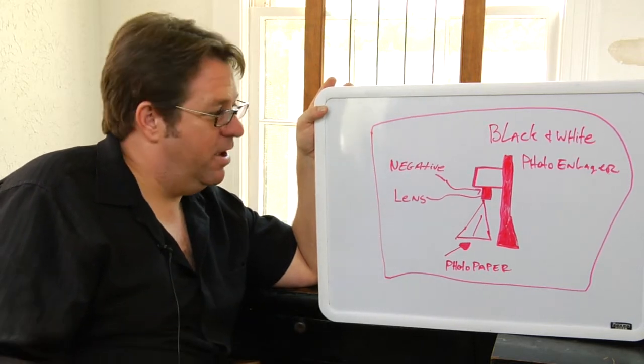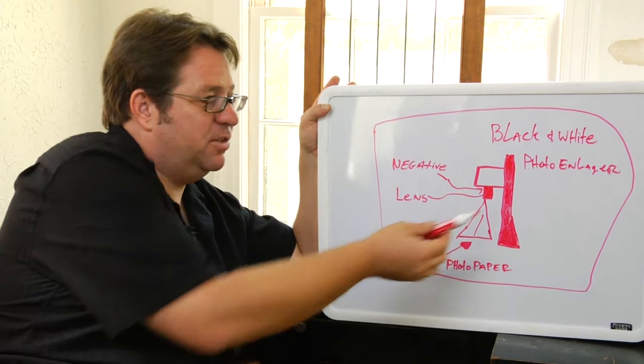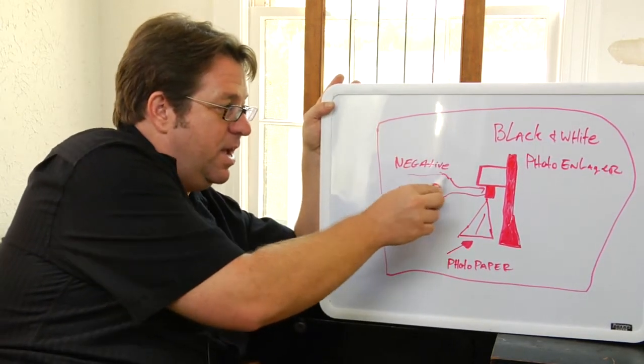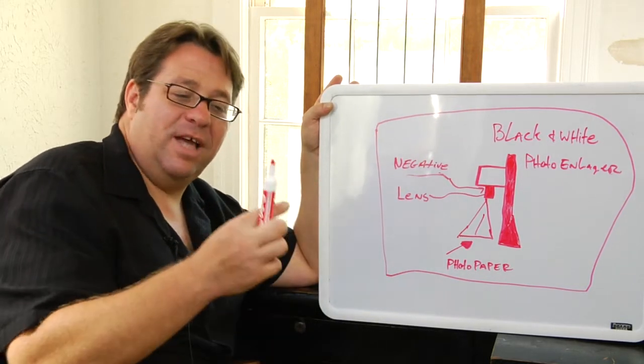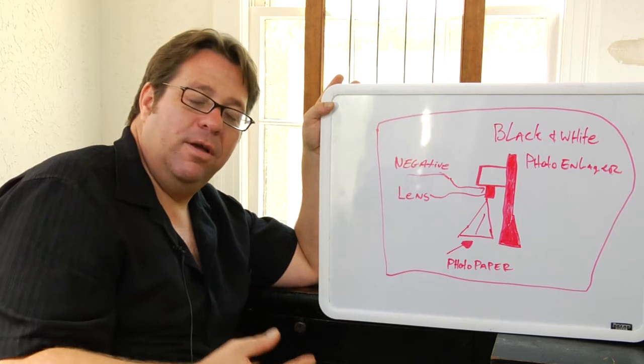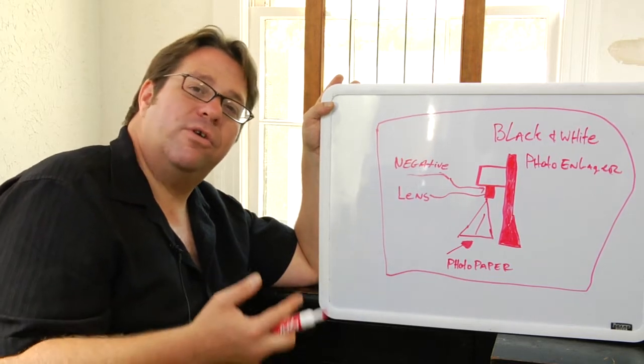Now a negative is not like a digital file. It's actually a physical negative that you've exposed with a film camera and developed either in a photo lab or a dark room. The negative goes into the enlarger.